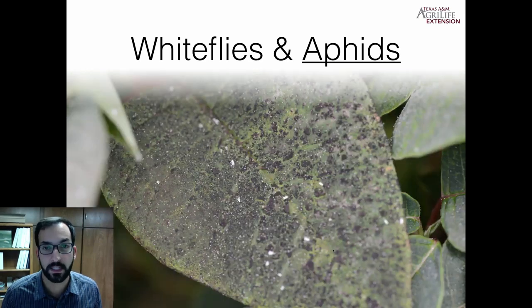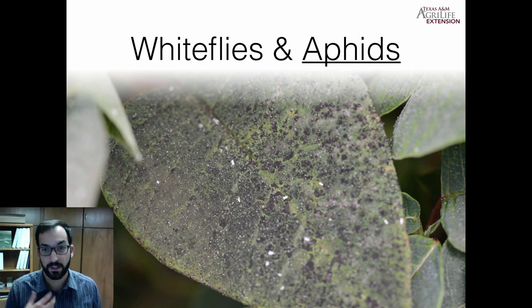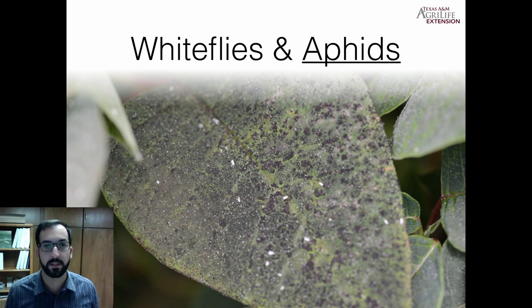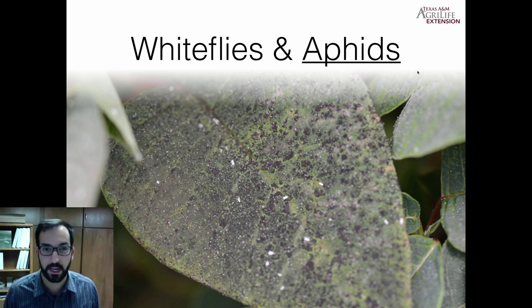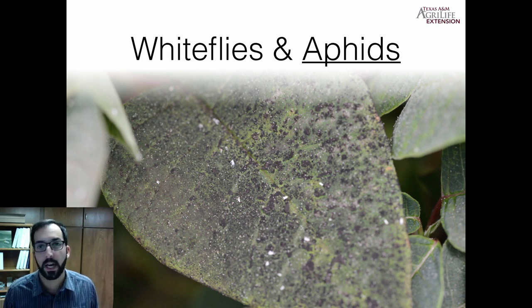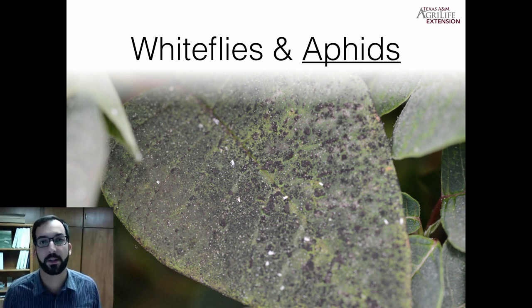If you leave that sticky honeydew buildup as is, you can get a concoction of molds. It's not just one specific species — it's a mix of molds that colonize that honeydew, referred to as sooty mold because it basically looks like soot. In a greenhouse production setting, this is typically considered a cull — you need to toss it. If you just have a few plants, you could try taking a soapy brush to it, though it's labor intensive.